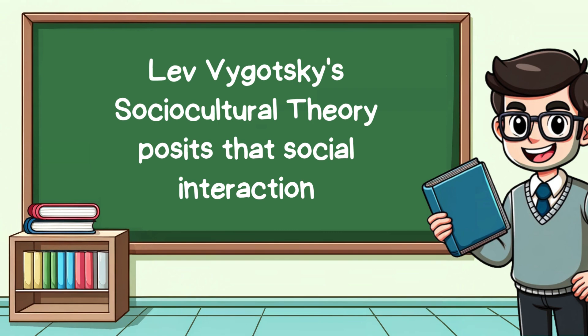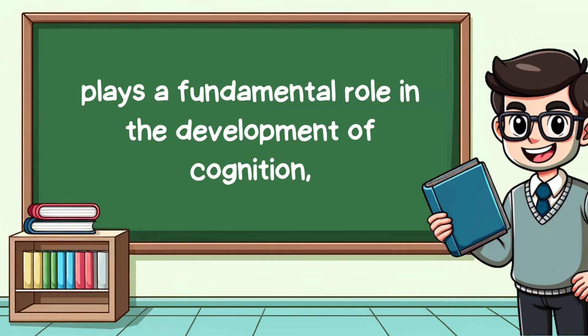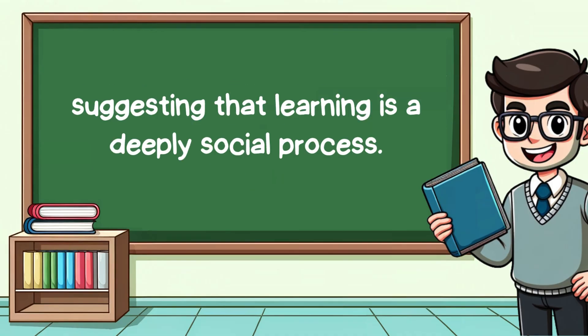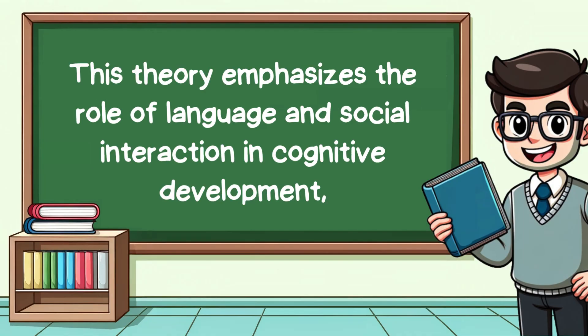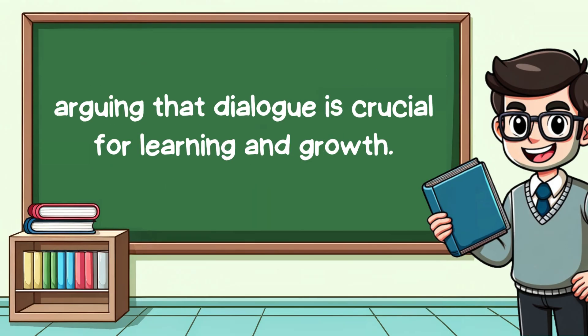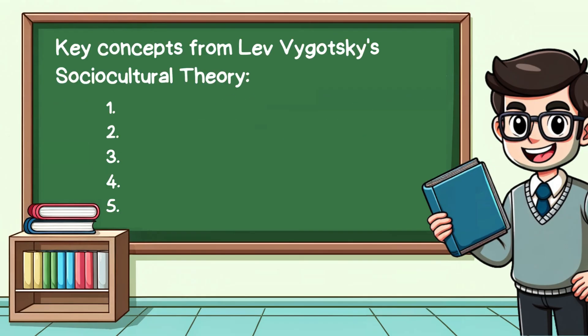Lev Vygotsky's sociocultural theory posits that social interaction plays a fundamental role in the development of cognition, suggesting that learning is a deeply social process. This theory emphasises the role of language and social interaction in cognitive development, arguing that dialogue is crucial for learning and growth. This video will explore five key concepts from Lev Vygotsky's sociocultural theory.